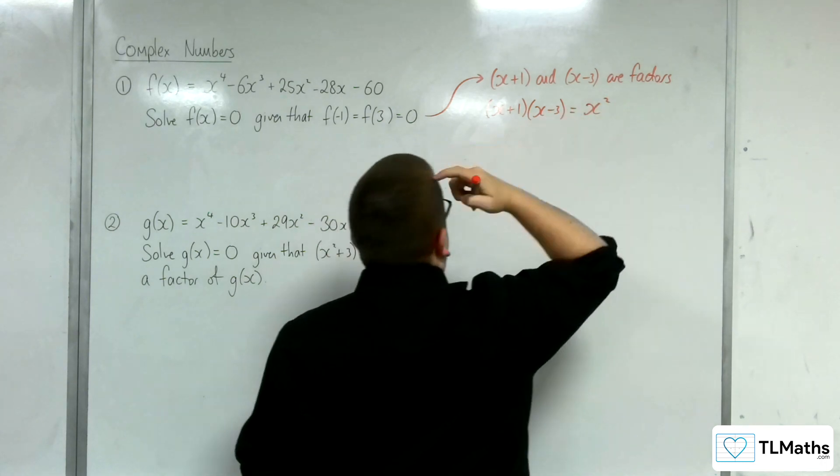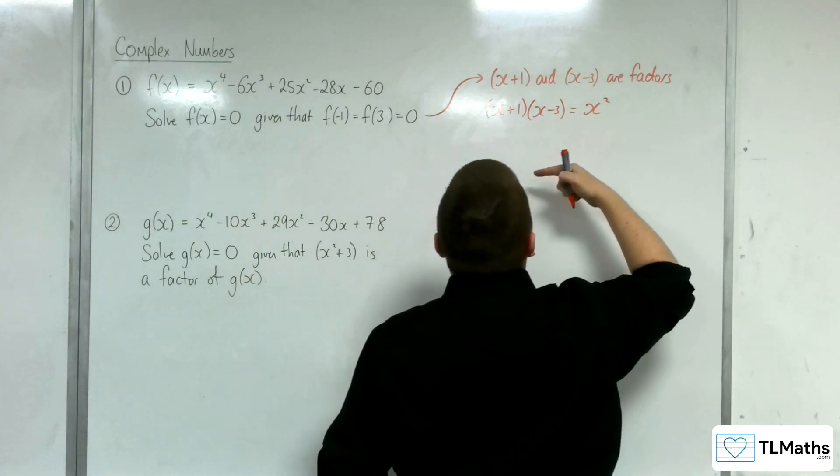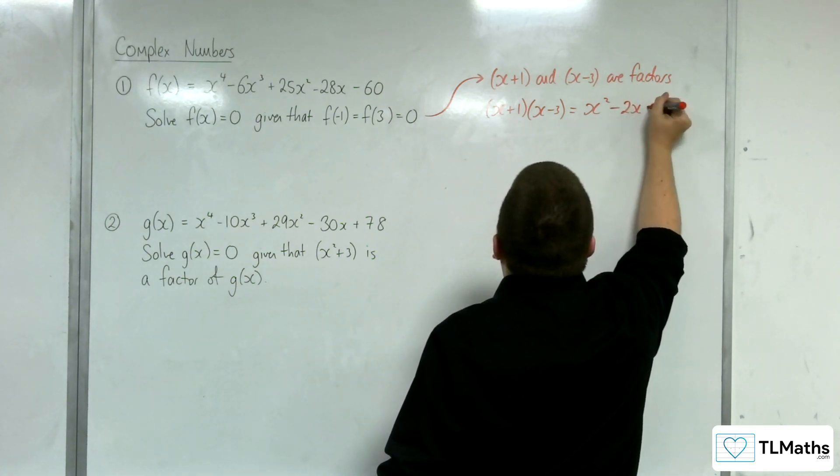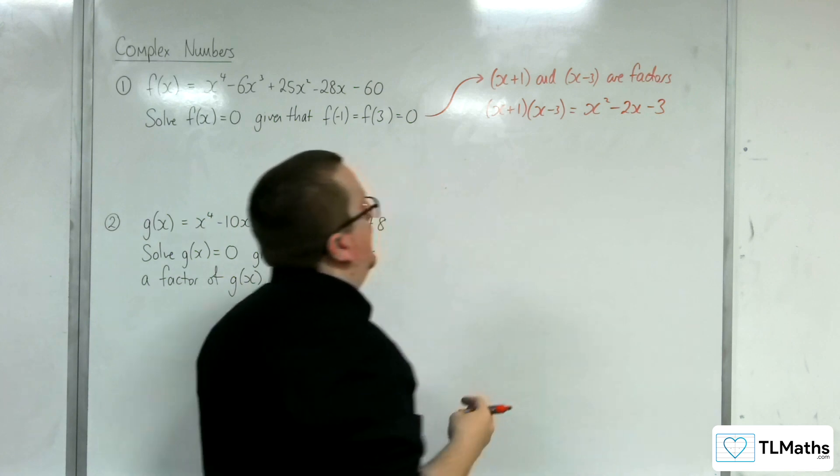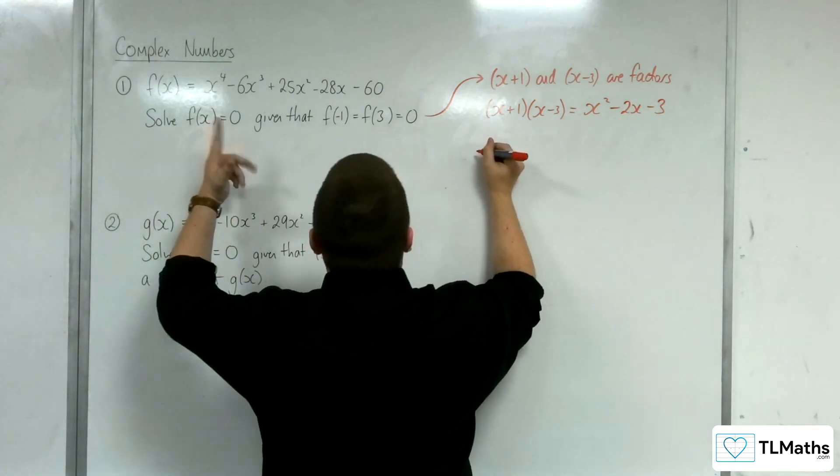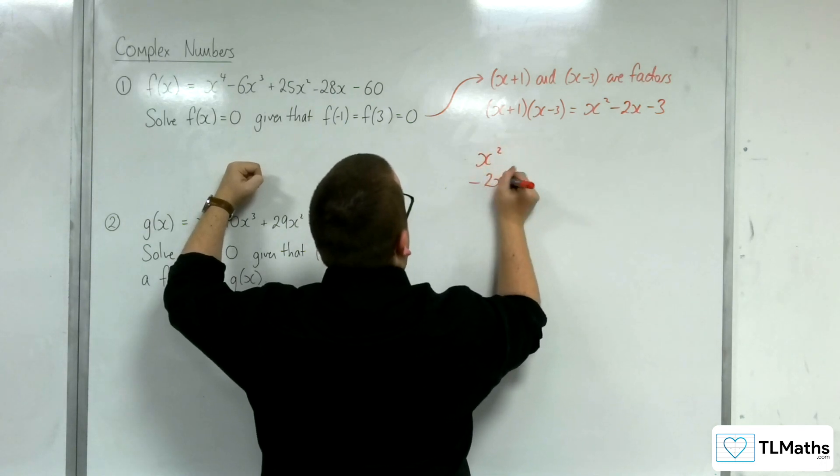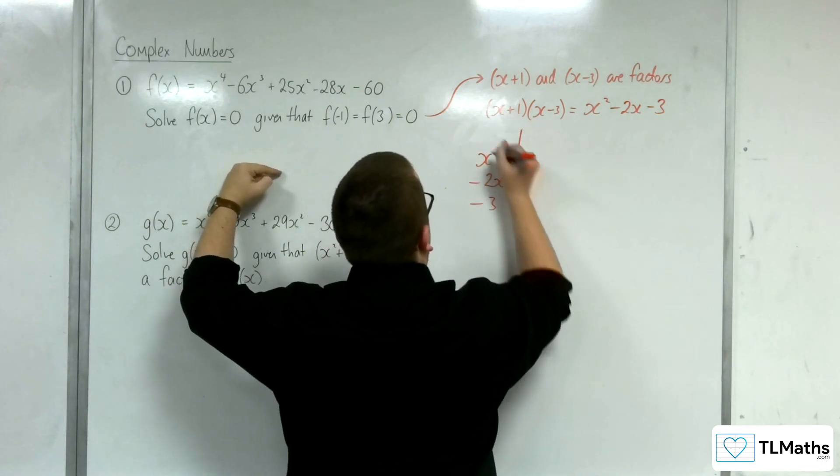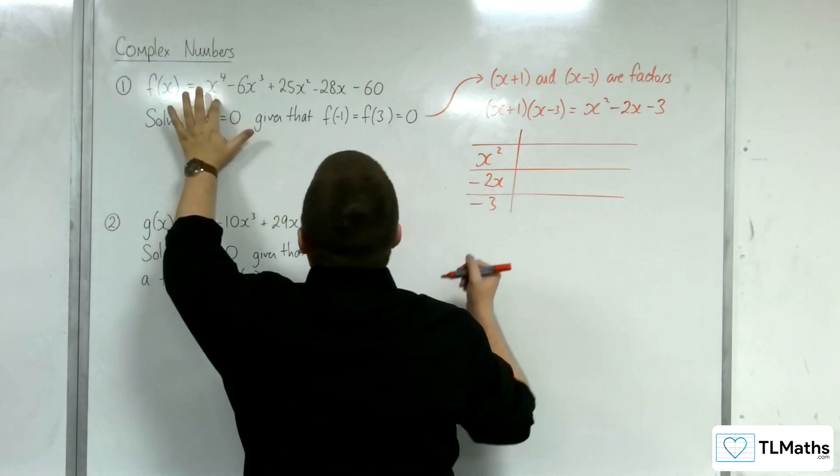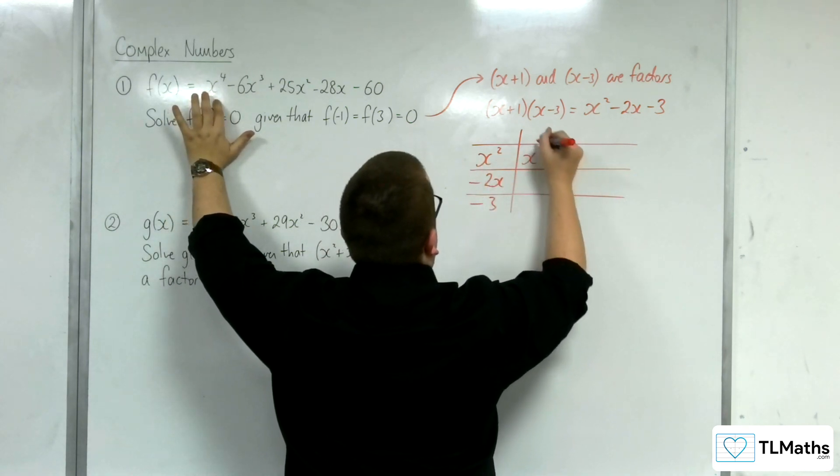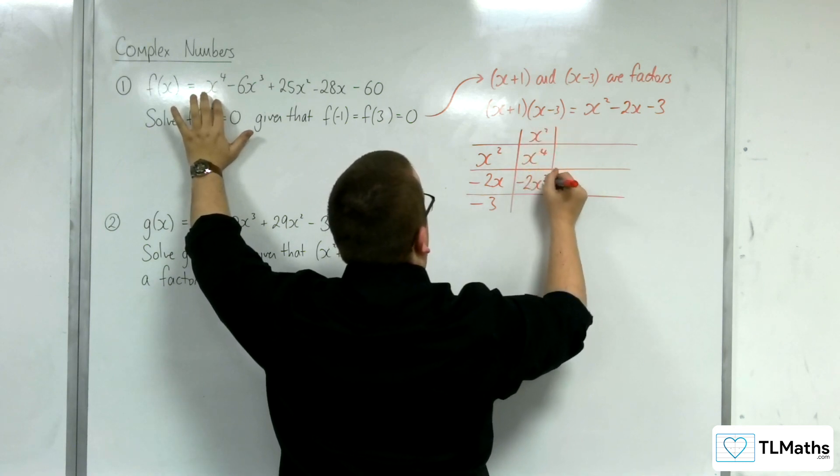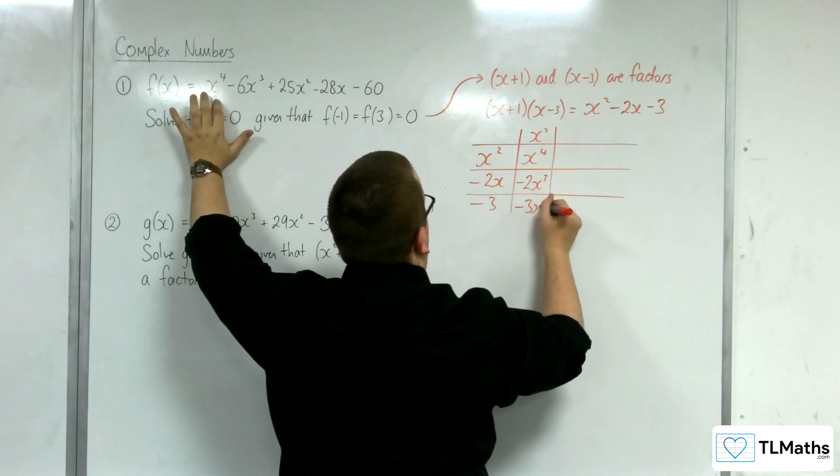So I'm going to multiply these brackets out first, because I know that this is a factor. That's going to get me x² - 2x - 3. So I'm going to divide the quartic by x² - 2x - 3. So I need x⁴, so I'd have to have x² there. So I'd get -2x³, and then -3x².